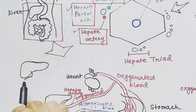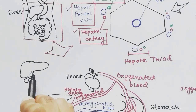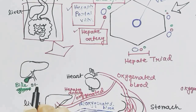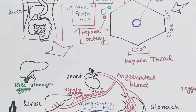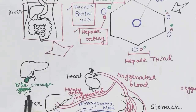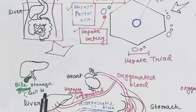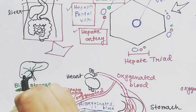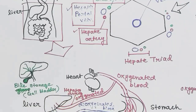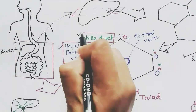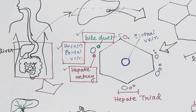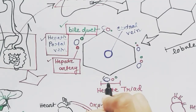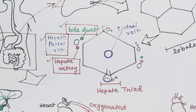Now coming to the bile duct: the gallbladder is present below the liver, and bile is stored in the gallbladder. The gallbladder has its connection or vessels surrounding the liver cells, and these form the bile ducts.